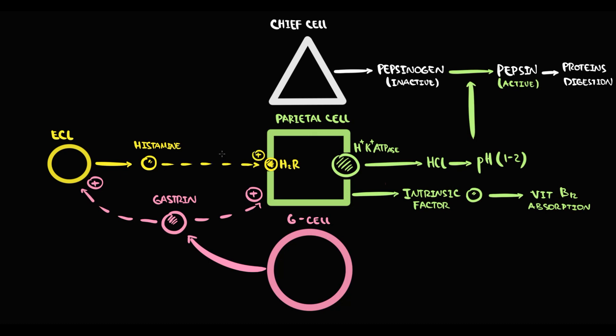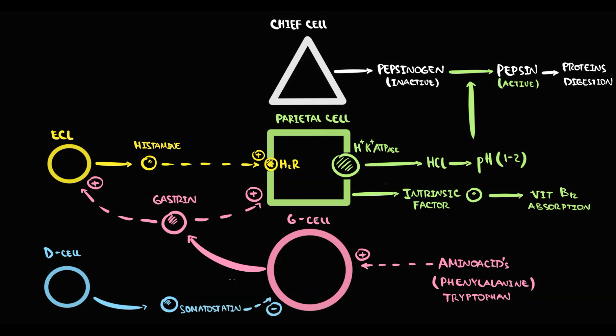The major factor that stimulates G cells is amino acids, mostly phenylalanine and tryptophan. The stomach also has D cells. The function of D cells is to produce somatostatin that inhibits the function of G cells.